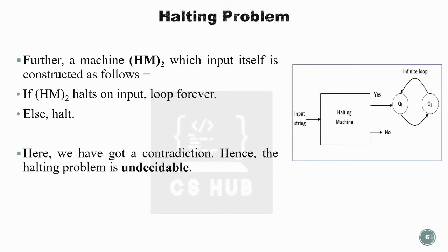Now we create a machine HM2, which takes HM' as its own input — that is, HM' is given its own description as input. If HM2 halts on the input, then it will loop forever. Otherwise, it will halt. This self-referential construction is key to the contradiction.